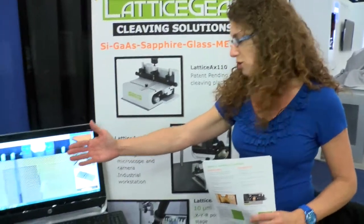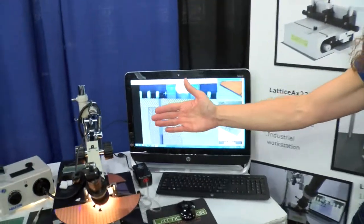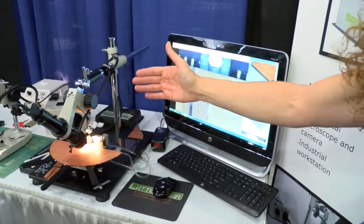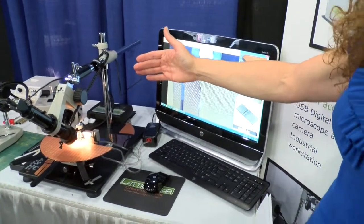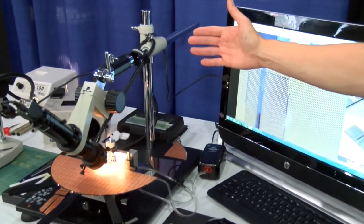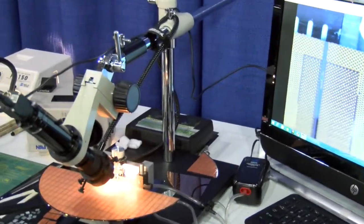In 2013 we introduced the new generation of LatticeX, the LatticeX 300 that incorporates high accuracy vision and allows you to view down to 5 micron features with cleaving accuracy of 10 microns.